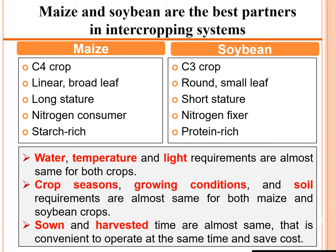A meta-analysis published in Nature Plants concluded that maize and soybean are the best partners in intercropping. Maize is a C4 crop with linear broad leaves, while soybean is a C3 crop with round small leaves. Maize is a tall nitrogen-consumer while soybean is a short nitrogen-fixer. Maize provides starch-rich food while soybean provides protein-rich food. Water, temperature, light requirements, and growing seasons are nearly the same for both crops, and they can be sown and harvested at the same time.